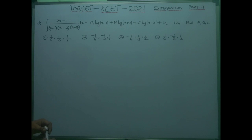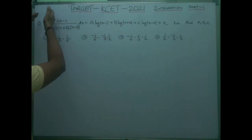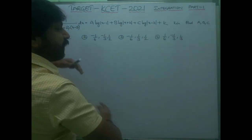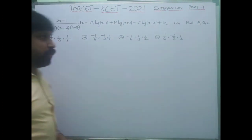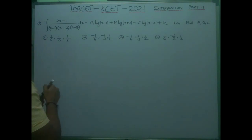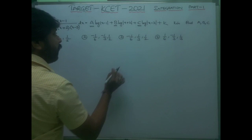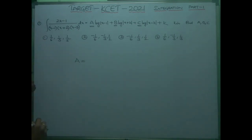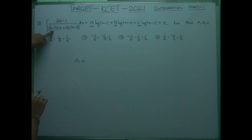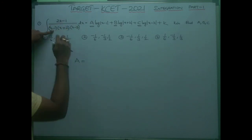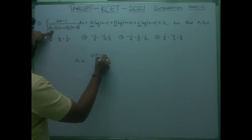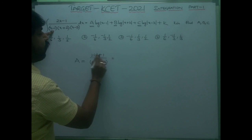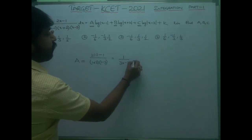Another method is to differentiate both sides so differentiation and integration cancel, then compare — but that also takes about one to one and a half minutes. My shortcut method: concentrate on finding A, B, C directly. To find A, the logarithm of (x − 1) corresponds to x − 1 = 0, so x = 1. Substitute x = 1 into the remaining values: (2·1 − 1) / [(1 + 2)(1 − 3)] = 1 / (3 × −2) = −1/6.